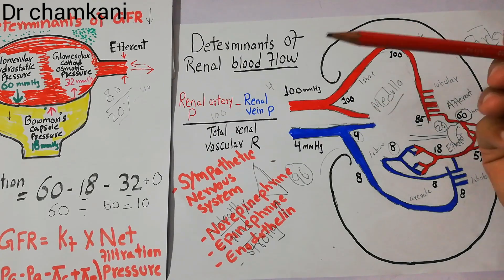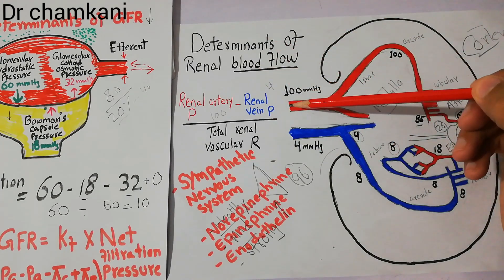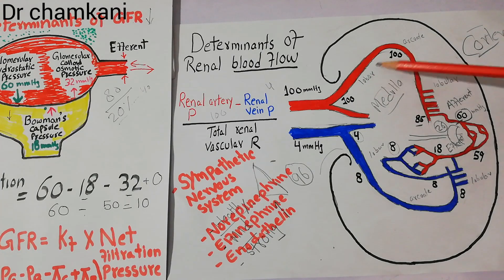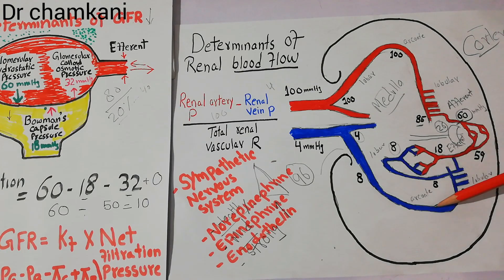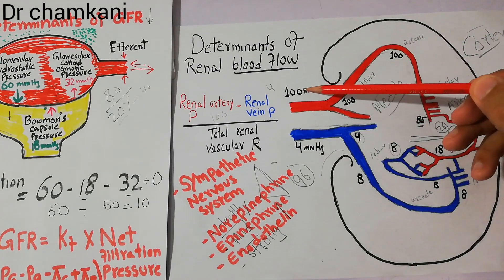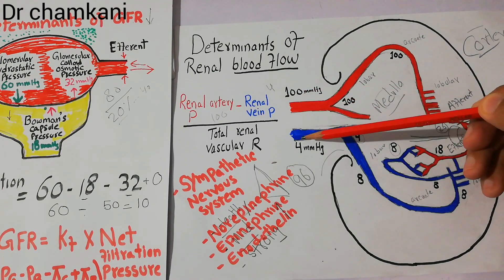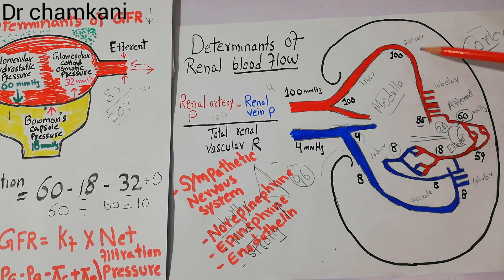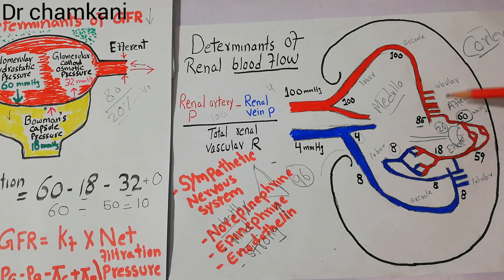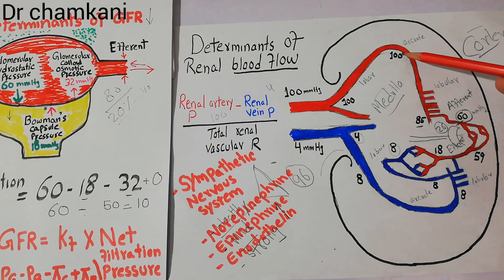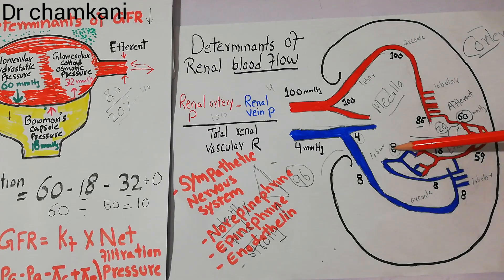To quickly revise renal blood flow: blood enters the kidney through the renal artery, then goes through the lobar artery, the arcuate artery, the lobular artery, then the afferent arteriole, the glomerular capillaries, then the efferent arteriole, the peritubular capillaries, the arcuate vein, the lobar vein, and finally the renal vein. Blood pressure starts at 100 mmHg and in the renal vein is 4 mmHg. The biggest pressure drop occurs between the lobular artery and the peritubular capillaries — from 100 mmHg down to 8 mmHg.